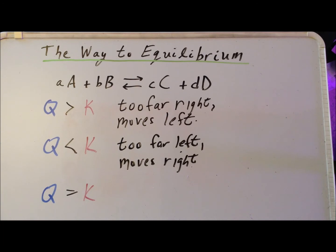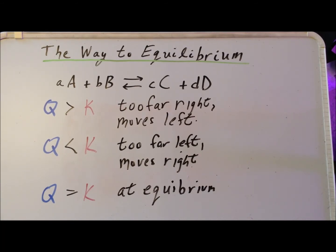The final possibility is that the reaction quotient Q has exactly the same value as the equilibrium constant. In this situation, the concentration of the products divided by the product of the concentrations of the reactants is exactly equal to the equilibrium constant. That tells us that we are at equilibrium and we're not going to see any movement away, so long as the temperature doesn't change and no other stress is put upon the system. So we can recognize that we have reached equilibrium.